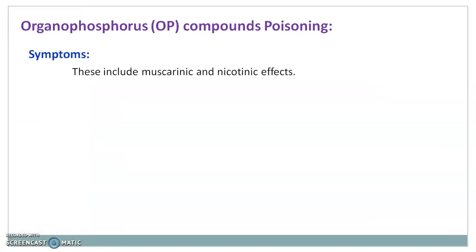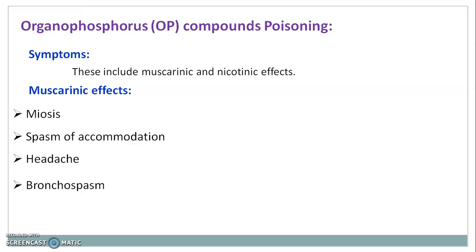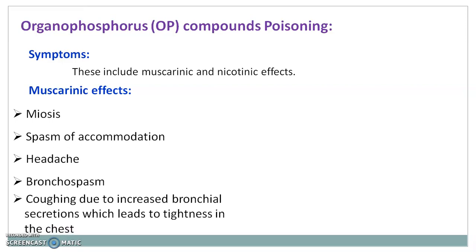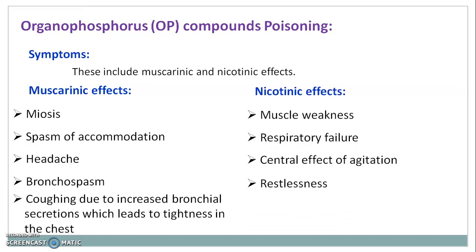Symptoms include muscarinic and nicotinic effects. The muscarinic effects seen in organophosphorus compound poisoning include miosis, spasm of accommodation, headache, bronchospasm, and coughing due to increased bronchial secretions which leads to tightness in the chest. The nicotinic effects are muscle weakness, respiratory failure, and central effects of agitation, restlessness, and seizure.